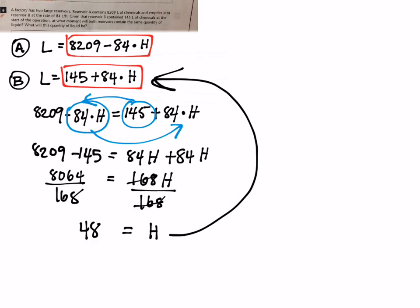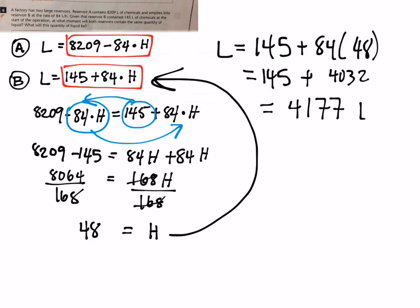To find out the exact amount of liquid in both containers I take this number 48 and I plug it back into one of the two equations above. I'm going to choose the bottom equation. That means the number of liters is equal to 145 plus 84 times 48 hours, which is equal to 145 plus 4,032 equals 4,177 liters.